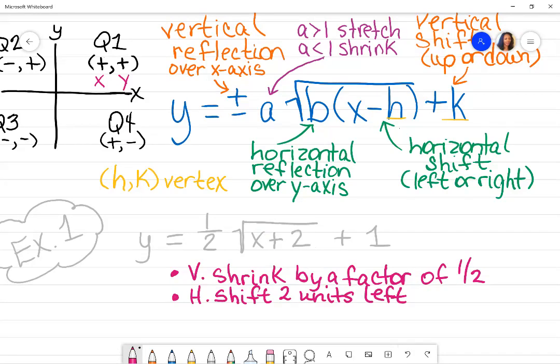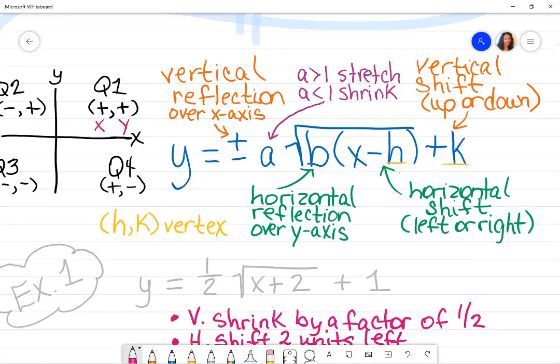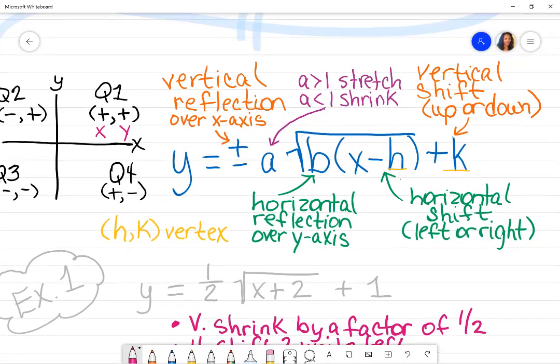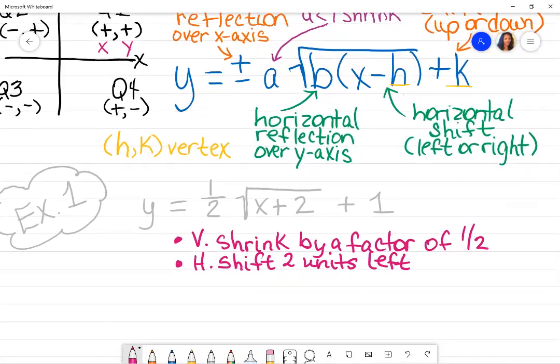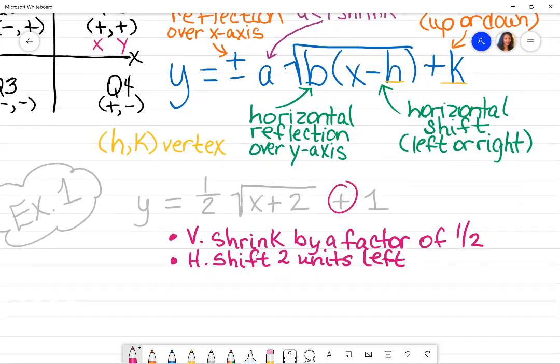The next transformation is K. So K tells us whether or not there's going to be a vertical shift up or down. Based off of the sign plus, that means it's going to go up. So it's a vertical shift, and I just abbreviated with the V, up one unit.